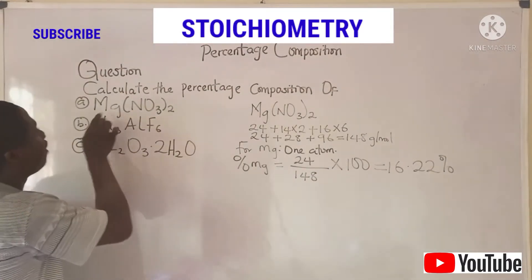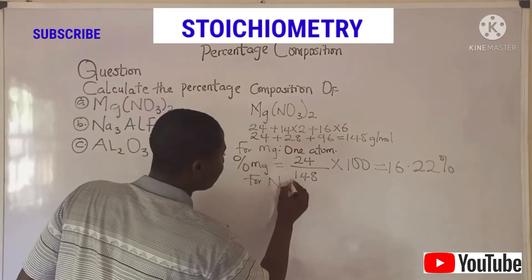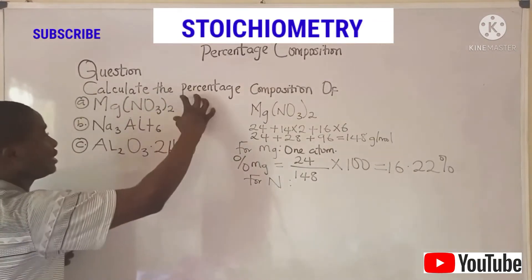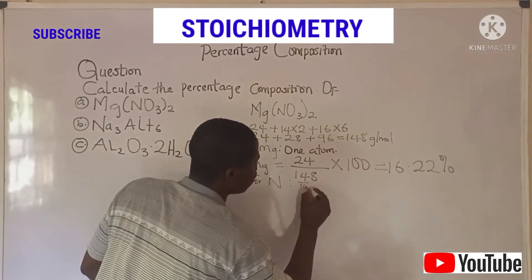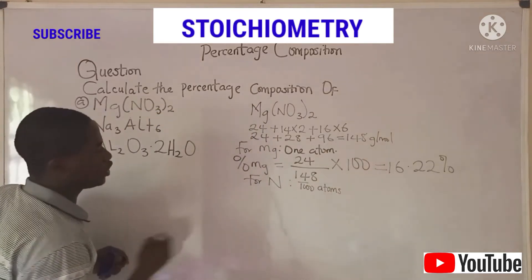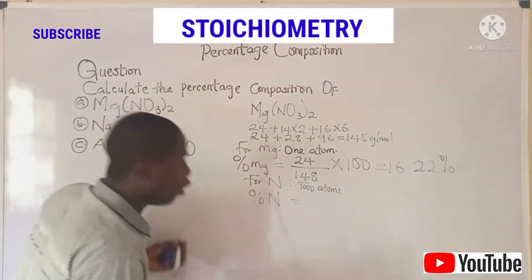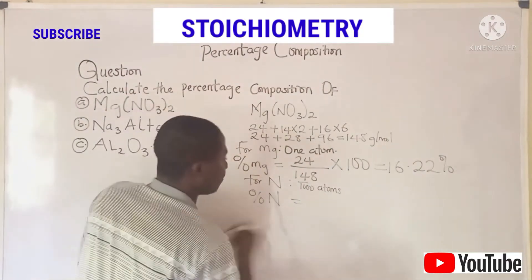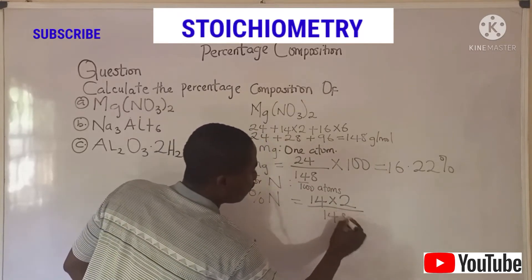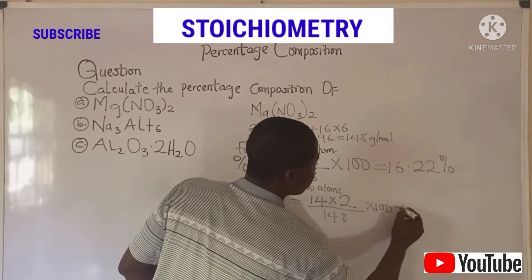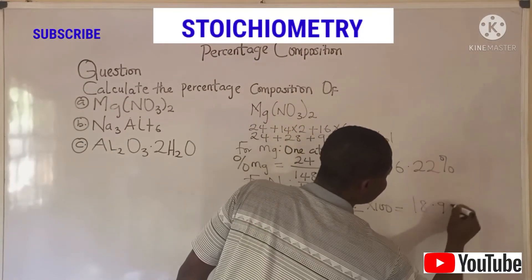Now let's determine the percentage composition of the other elements that make up this compound. For nitrogen: we need to deduce how many atoms of nitrogen are present. We have two atoms of nitrogen, as the 2 is affecting everything inside the bracket. So the percentage composition of nitrogen equals the atomic mass of nitrogen times the number of atoms — 14 times 2 — over the formula weight, which is 148, times 100. We get the percentage of nitrogen inside magnesium nitrate as 18.92%.